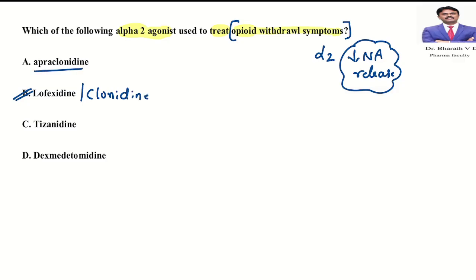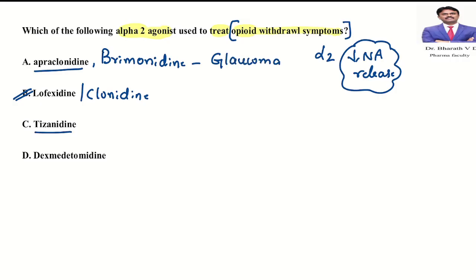Alpha-2 agonists apraclonidine and brimonidine — can you tell me where we use them? We use them to manage glaucoma. We have one more alpha-2 agonist called tizanidine.